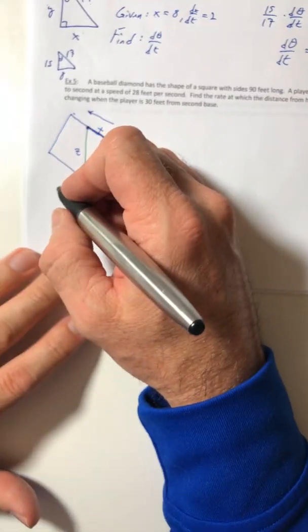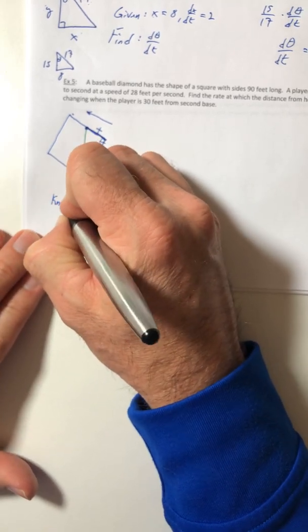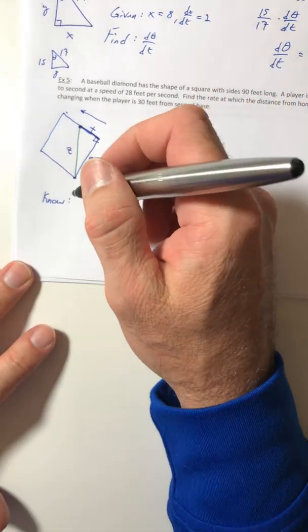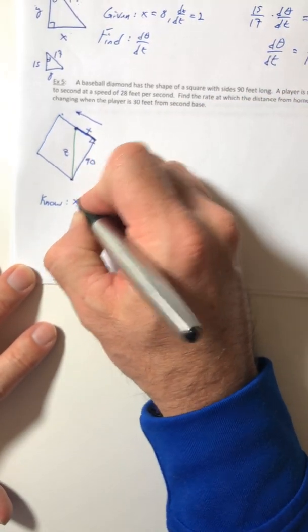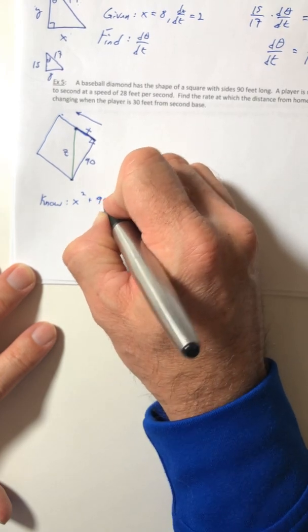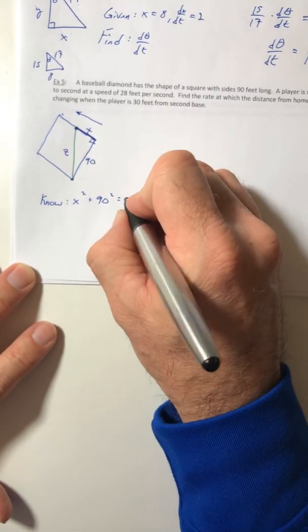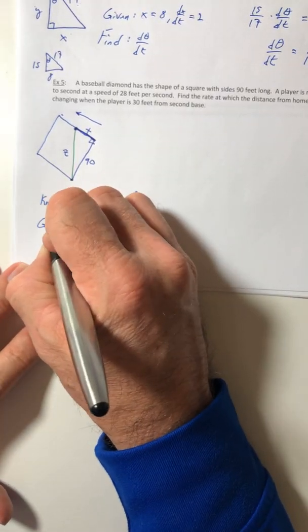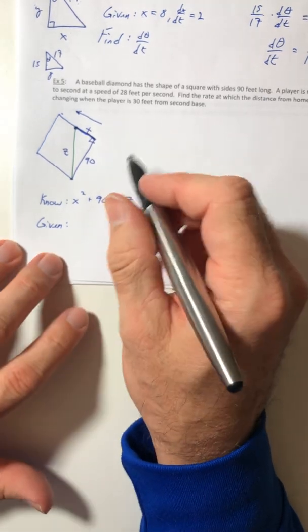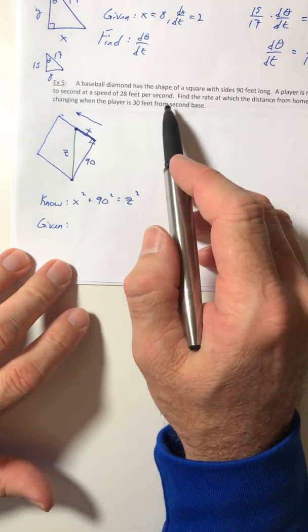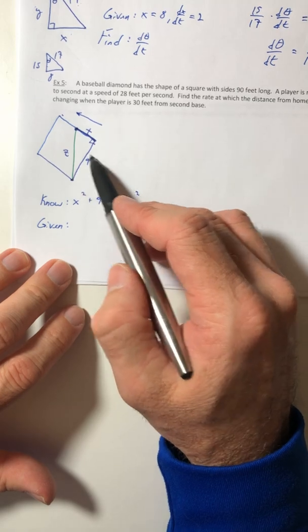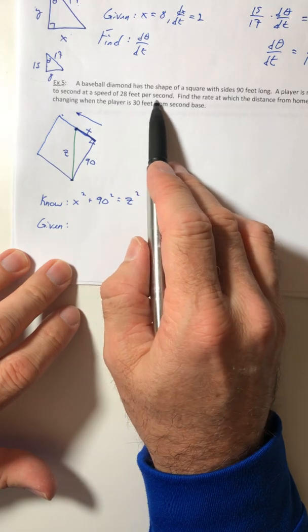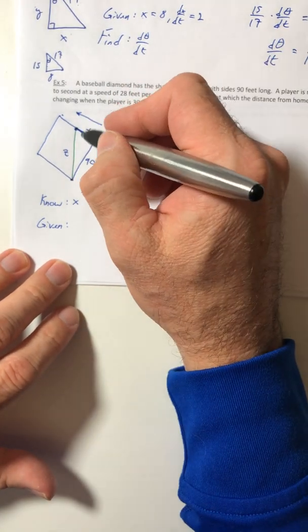So what do we know that would apply to this? You're talking about lengths on a right triangle again, so let's use the Pythagorean theorem. X squared plus 90 squared equals Z squared. The givens, what did they actually give you? We know the sides are 90 feet. He's running from first to second at a speed of 28 feet per second. So the X is what's changing, so DX DT is 28.